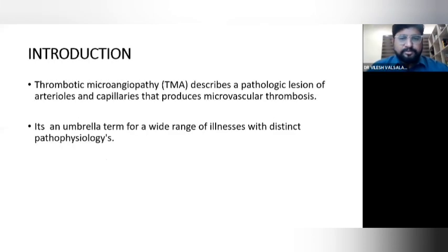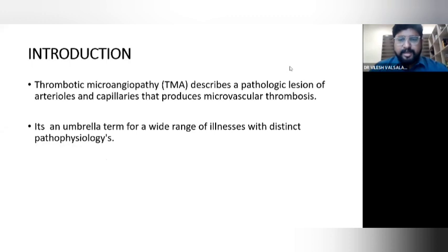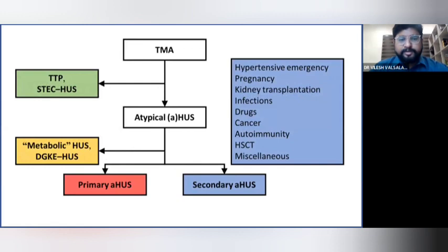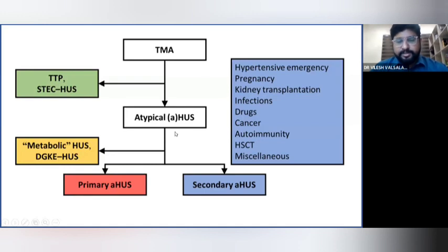Thrombotic microangiopathy describes a pathological lesion of arterioles and capillaries that produces microvascular thrombosis. It's basically an umbrella term for a wide range of illnesses with distinct pathophysiologies. TMA can be divided into primary and secondary causes. Primary causes include thrombocytopenic purpura, Shiga toxin E. coli HUS, metabolic HUS syndromes, diacylglycerol kinase EHUS, and atypical HUS, which can further be divided into primary and secondary.